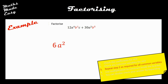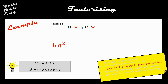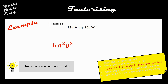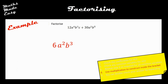Step 3: repeat step 2 for any other common variables. I can see that b is common to both, so I go through exactly the same process. Looking at b³ and b⁵, how many can I take out of both terms? The answer is b³. The final variable is c, but c is not common to both terms, so I skip it and move on to step 4.